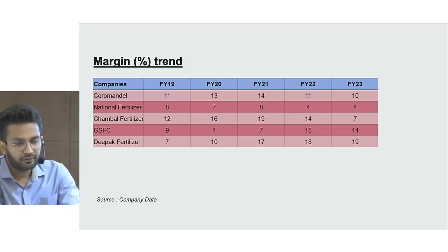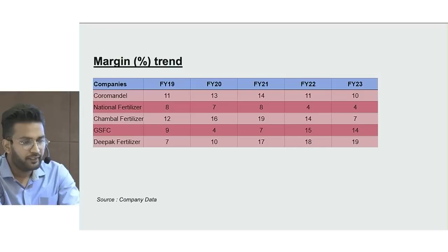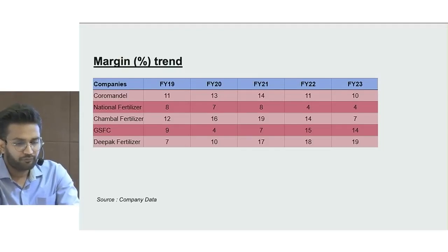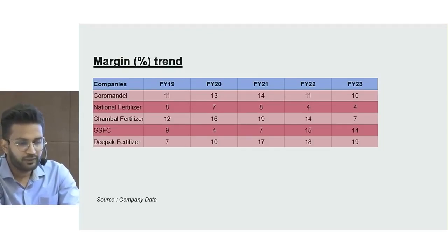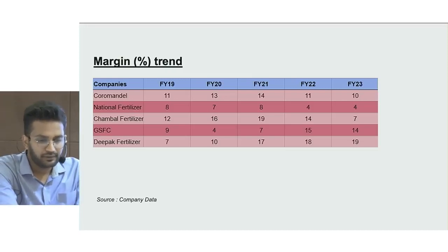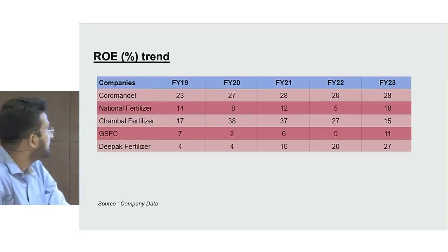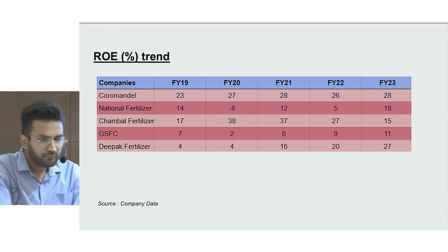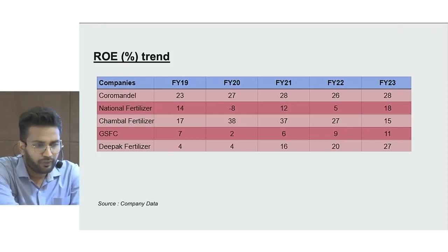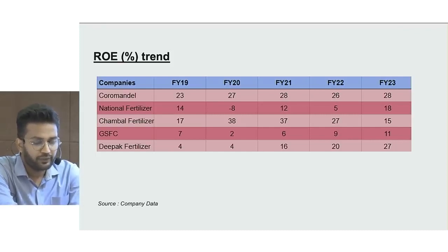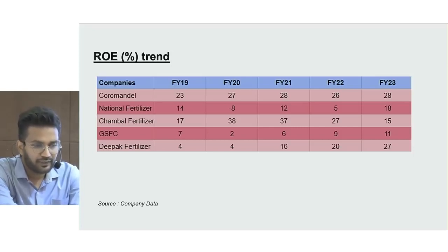Among PSU companies like National Fertilizers, GSFC and RCF, they still struggle to improve margins mainly due to operational inefficiency and competition from private companies. Globally, fertilizer companies have better margins than Indian counterparts because they are completely backward integrated with global presence. In terms of ROE trend over the last 5 years, Coromandel with a diversified business has performed well, Chambal's ROE has improved, while National Fertilizers, GSFC and Deepak show volatile numbers.